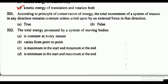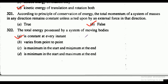Question 321: according to the principle of conservation of energy, the total momentum of a system of masses in any direction remains constant unless acted upon by an external force — true or false? Option B is correct: it is false. Question 322: the total energy possessed by a system of moving bodies is constant at every instant, varies from point to point, maximum at start, or minimum at start? The correct answer is option A, constant at every instant.